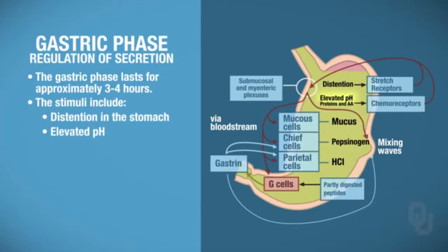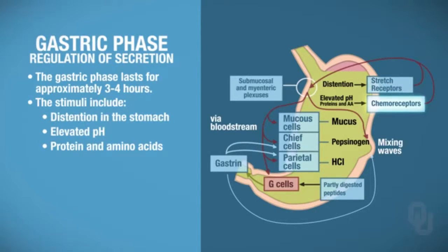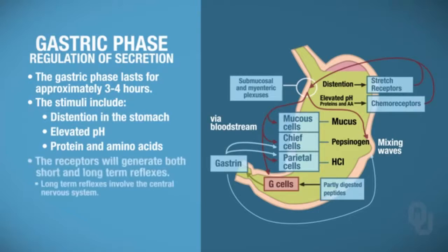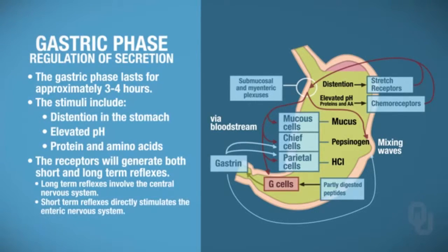The stomach environment is more basic. Proteins present in the stomach help stimulate chemoreceptors, and amino acids are also present as some proteins are broken down. Stretch receptors detect the distension, while chemoreceptors detect the elevated pH, proteins, and amino acids in the lumen of the stomach. This generates short- and long-term reflexes — long reflexes involve the central nervous system, while short reflexes directly stimulate the enteric nervous system.